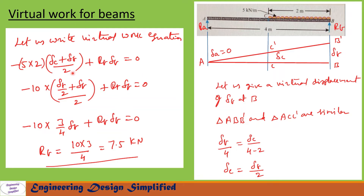Now let us write the virtual work equation. The total load is 5 kN/m × 2 m. The average displacement between C and B is (delta_C + delta_B) / 2. So the equation is: −5 × 2 × (delta_C + delta_B) / 2 + R_B × delta_B = 0. Substituting delta_C = delta_B / 2 and simplifying, we get reaction at B: R_B = 7.5 kilonewton.